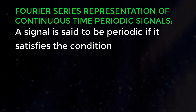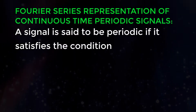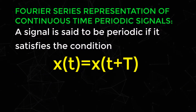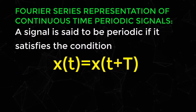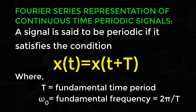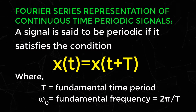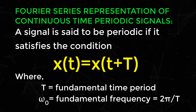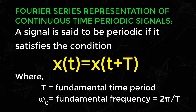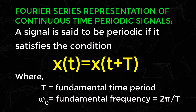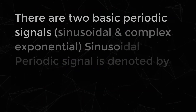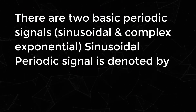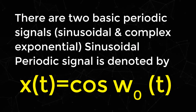For Fourier series representation of continuous time periodic signals, a signal is said to be periodic if it satisfies the condition X(T) = X(T + T), where T is equal to the fundamental time period. Omega-naught is equal to the fundamental frequency, where omega-naught equals 2π divided by T.